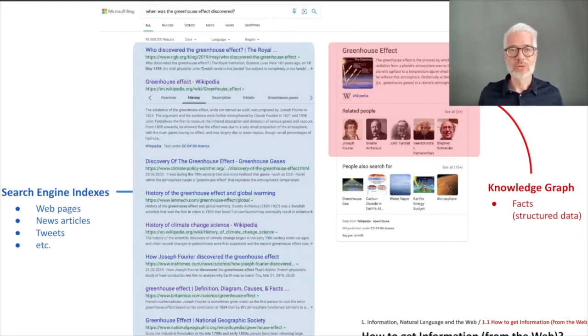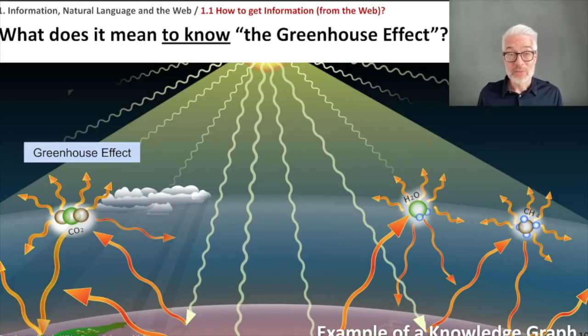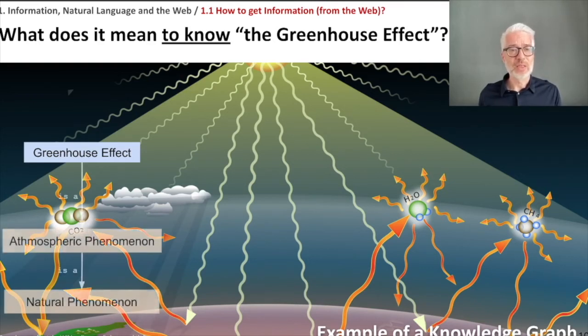But what does it mean to know something and to represent knowledge within a search engine in terms of a knowledge graph? The question is, what does it mean to know the greenhouse effect? If I ask you, what do you know about the greenhouse effect, you might tell me: the greenhouse effect is kind of an atmospheric phenomenon, and an atmospheric phenomenon is a natural phenomenon. What you do here is put this entity greenhouse effect in a class of similar things, the class of atmospheric phenomena.